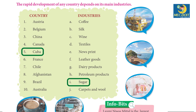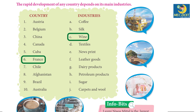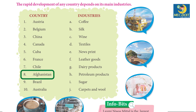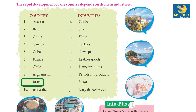5. Cuba — Sugar. 6. France — Wine. 7. Chaal — Petroleum Products. 8. Afghanistan — Carpets and Wool.